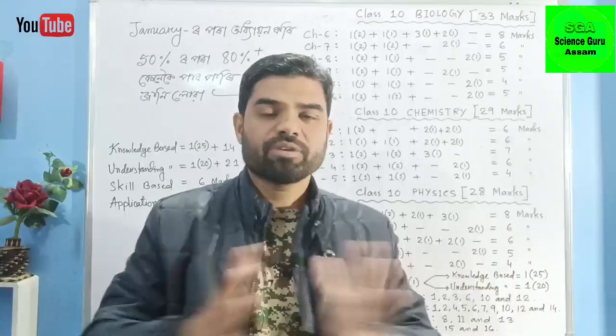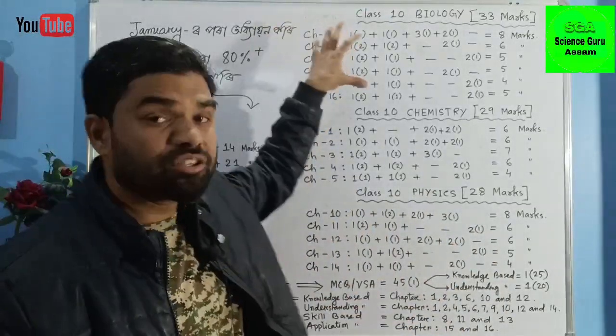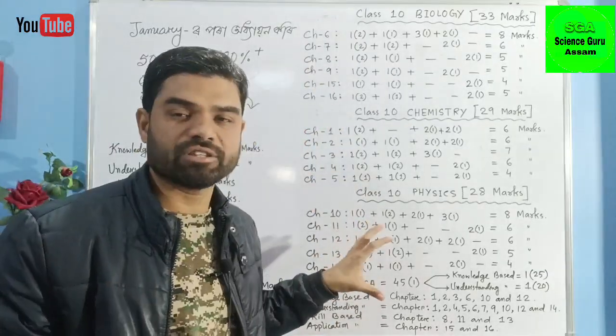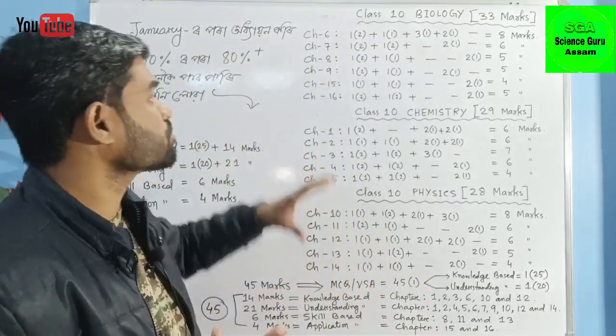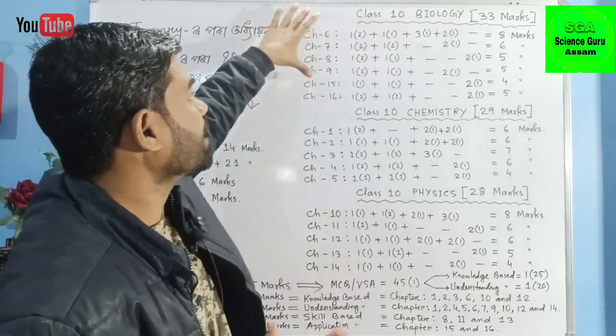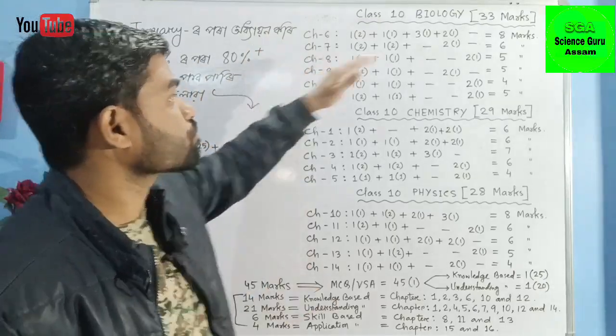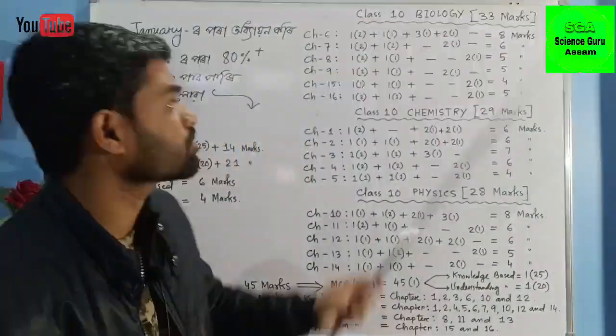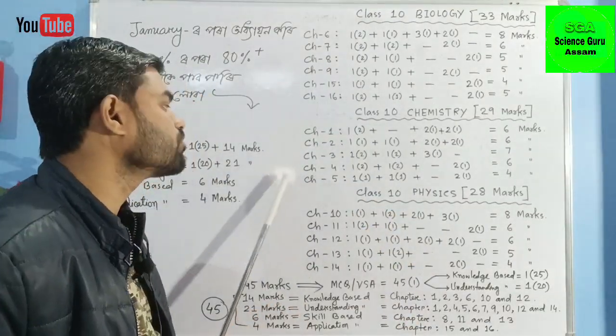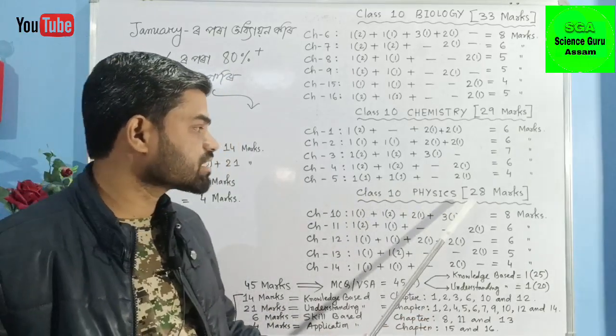Let me start with Biology. I suggest you start with Biology and Chemistry first, then Physics at the end. In Biology, there are chapters 6, 7, 8, 9, 15, and 16 - totaling 33 marks. In Chemistry, chapters 1 through 5 give 29 marks, and Physics has 28 marks.